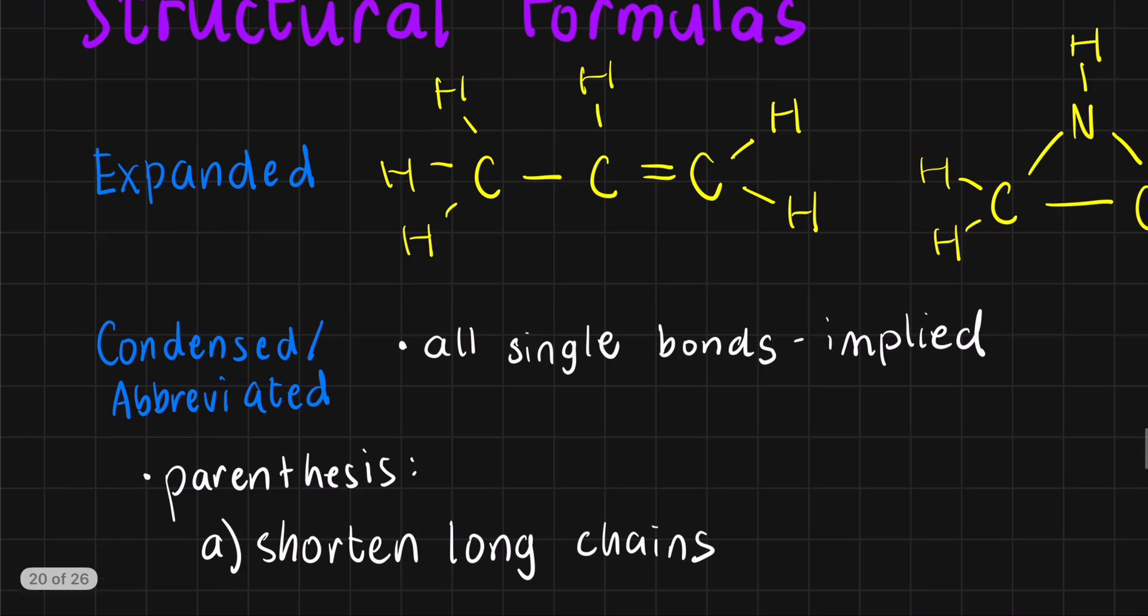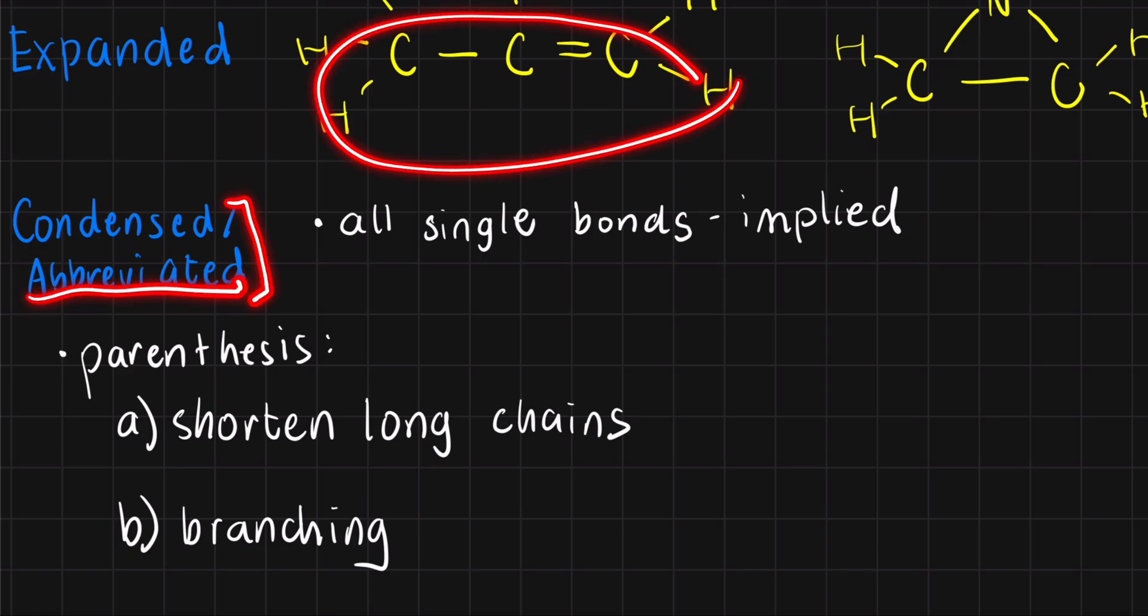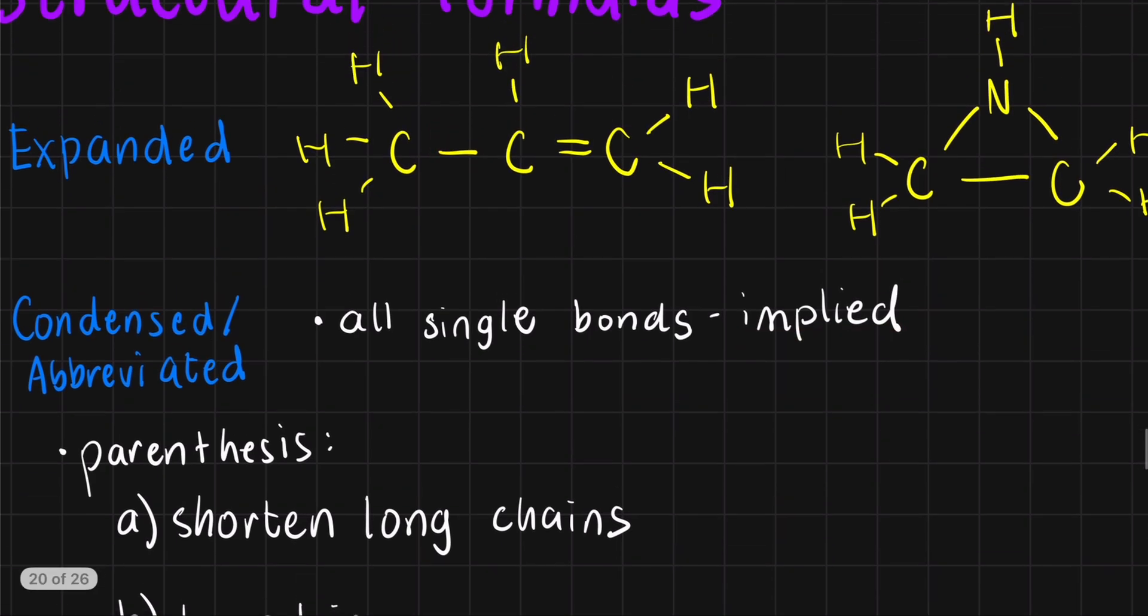Now, if you go to the condensed version, as the names imply - condensed or abbreviated - when you condense something, it's like you're compressing it or making it smaller. Abbreviated is what you do when you shorten a series of words. In either way, it means you make it smaller. How do you make an expanded drawing smaller? You just imply the single bonds. When we say implied, it means they are still there, it's just that we make them invisible.